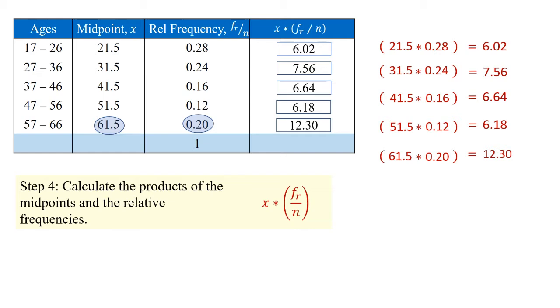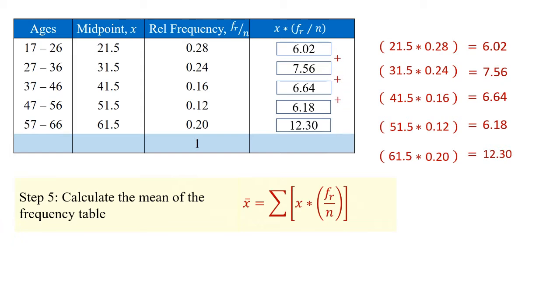The next step is to sum each of these products. 6.02 plus 7.56 plus 6.64, 6.18 plus 12.3 gives us a total of 38.7.